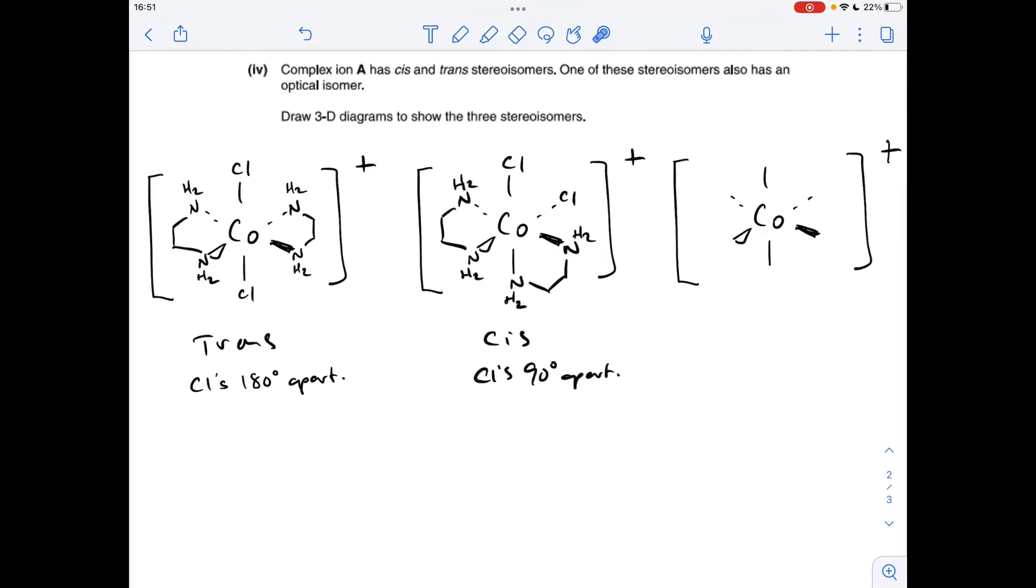The reason I've drawn them in this order—trans first, then cis—is because the mirror image of the cis isomer is not superimposable on the first one, and these are the optical isomers. So all I need to do is draw the mirror image of this: a Cl there and there, bidentate here and bidentate there.